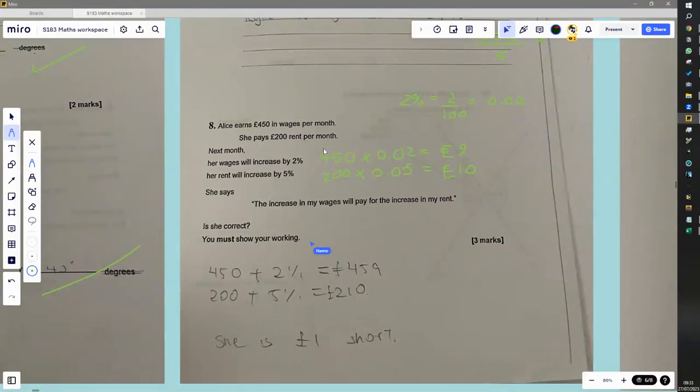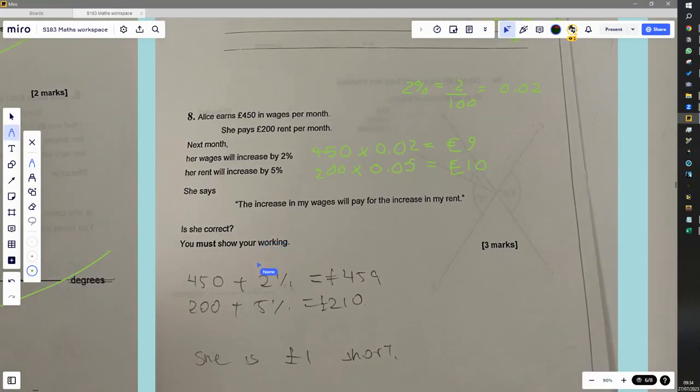So that would have probably, again, probably get the marks, but possibly you would have lost a mark because you didn't show this bit. You'd probably get away with it though.